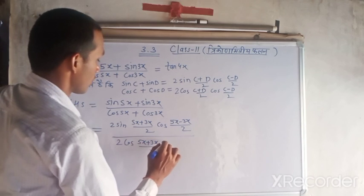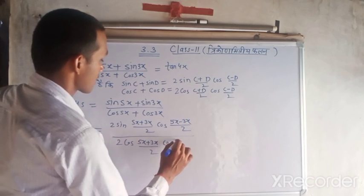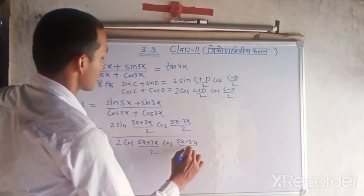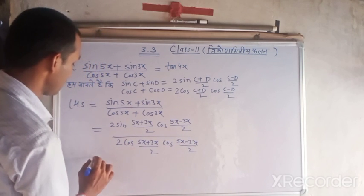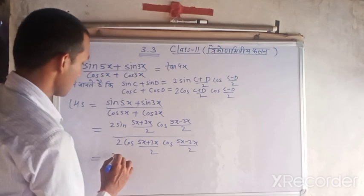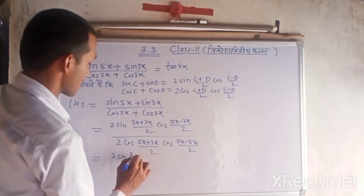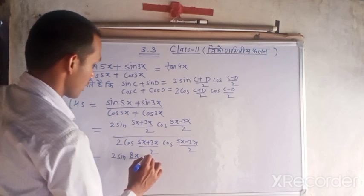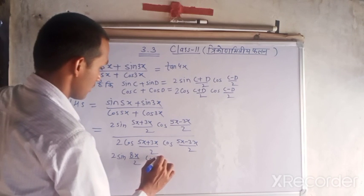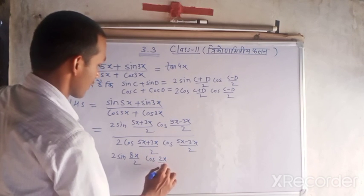...cos (5x - 3x)/2. Here we will get 2 sin 8x/2 and here we will get 2x/2.